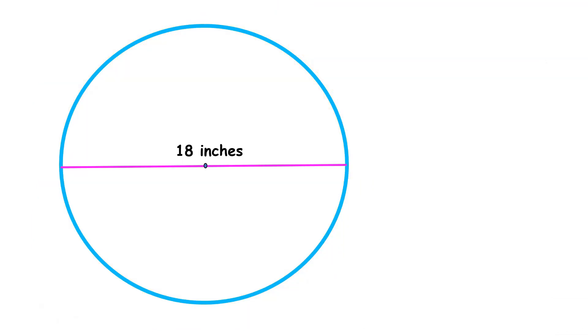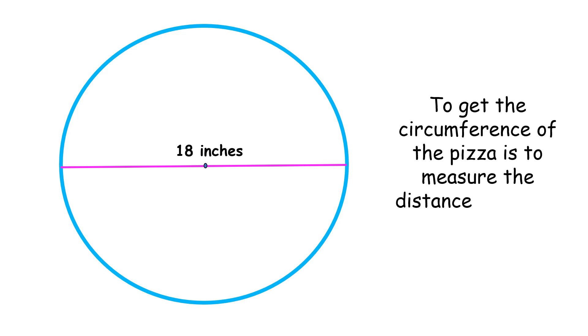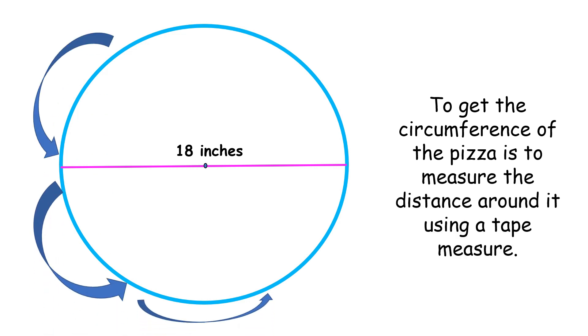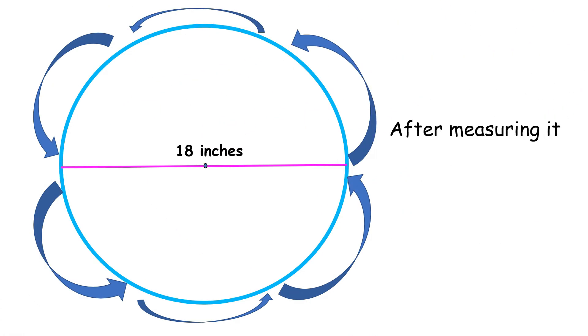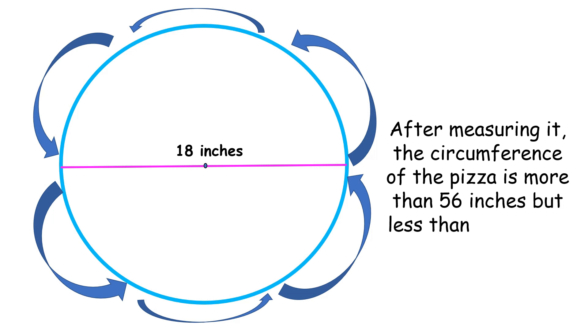One way to get the circumference of the pizza is to measure the distance around it using a tape measure. After measuring it, the circumference of the pizza is more than 56 inches but less than 57 inches. What is the exact circumference of the pizza?